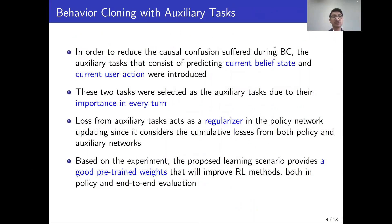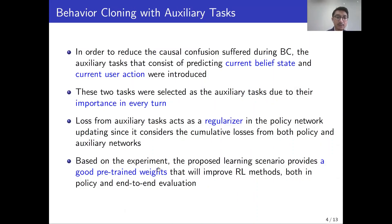In order to reduce causal confusion, we propose behavior cloning with auxiliary tasks that consist of predicting the current belief state and current user action. Those two tasks were selected due to their importance in every turn, and the loss from auxiliary tasks acts as a regularizer to the policy network. Based on the experiments, the proposed learning scenario provides a good pre-trained weight that improves RL methods in both policy and end-to-end evaluation.